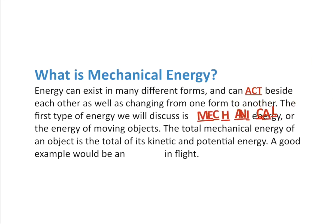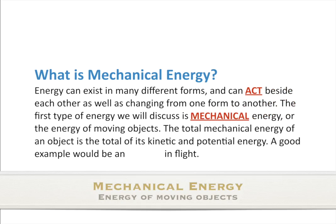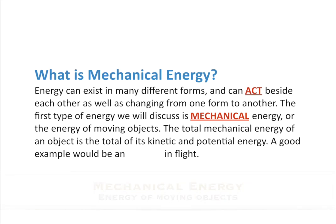The first type of energy we will discuss is what we call mechanical energy, or the energy of moving objects. A bouncing ball, your arms flapping around — all moving objects demonstrate mechanical energy. How much mechanical energy does an object have? You add up the total amount of kinetic and potential energy, and that gives you the total amount of mechanical energy.